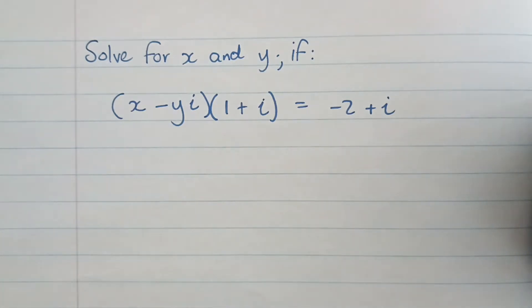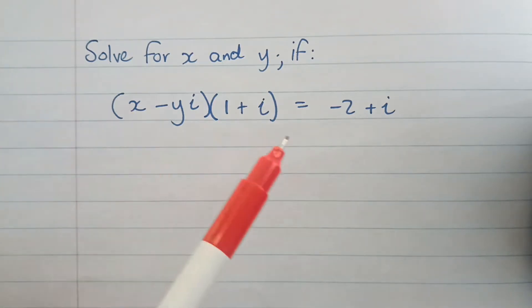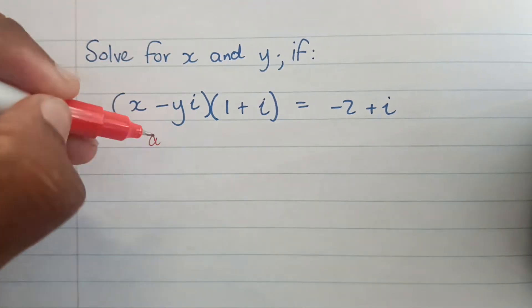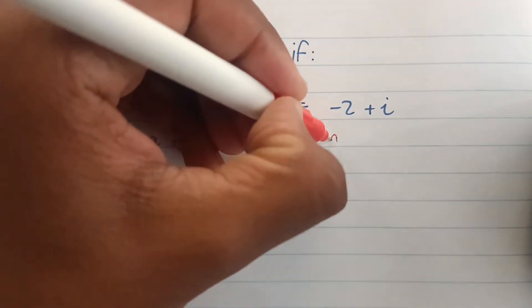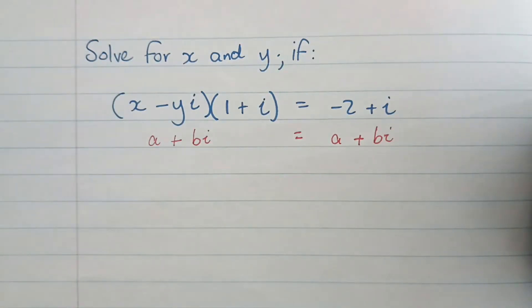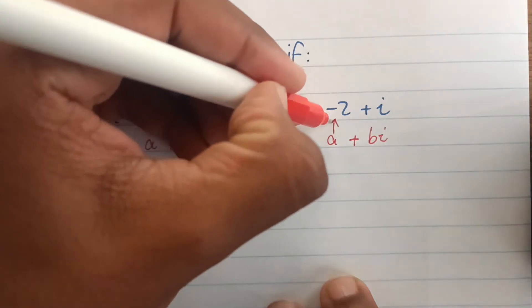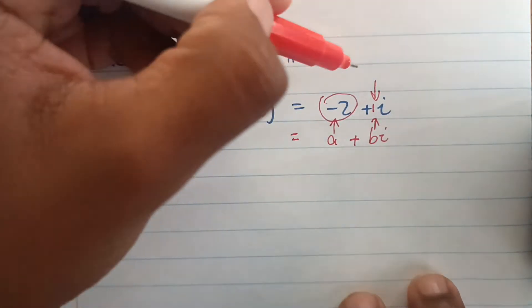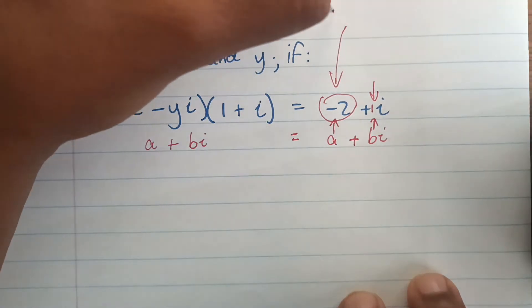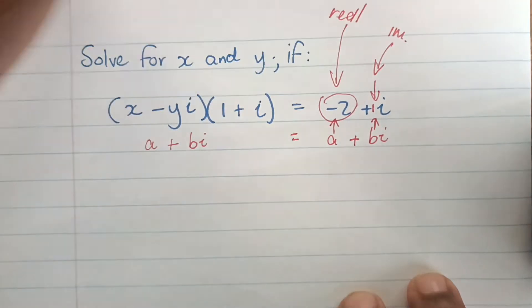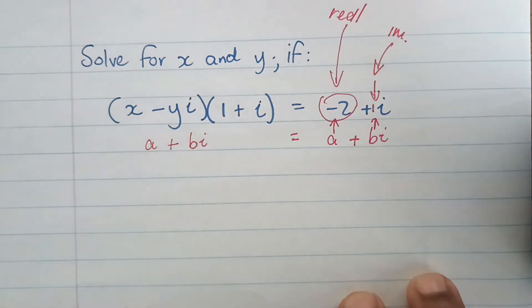We are solving for x and y with complex numbers. What we want to do is have both sides in rectangular form — that's the first thing we need to do. Rectangular form on the left-hand side means a+bi, and similarly on the right-hand side a+bi. The right-hand side is already easy — we can clearly see what a and b are. Here a is our real component and i is our imaginary component. On the left-hand side it's not clear yet, so we need to do some work.